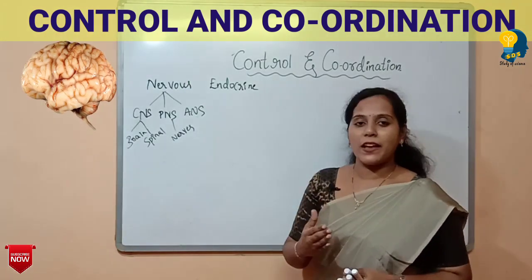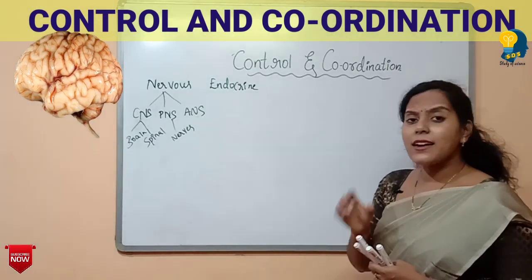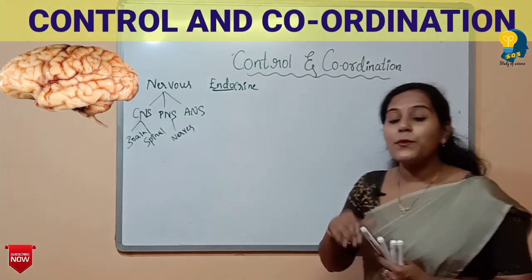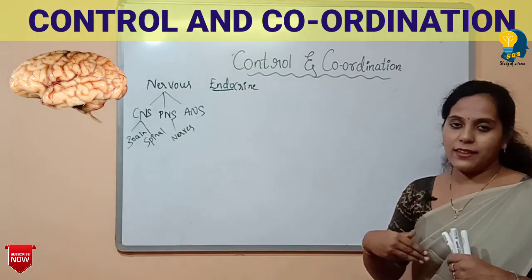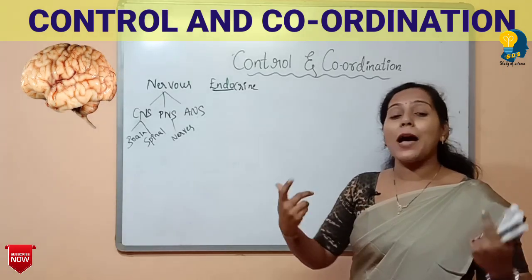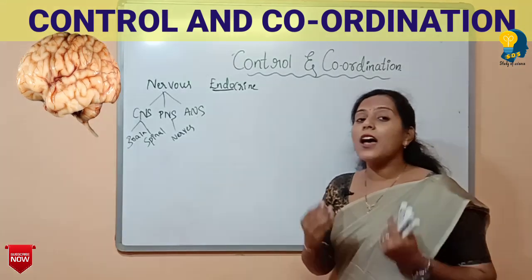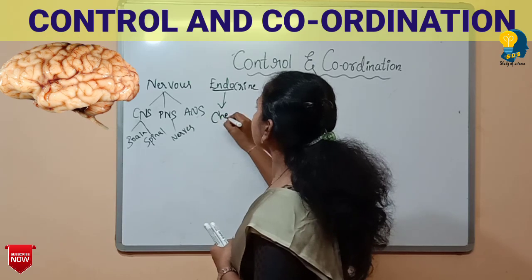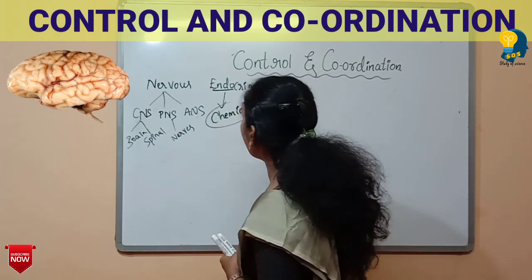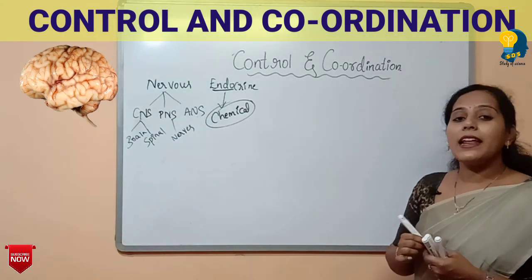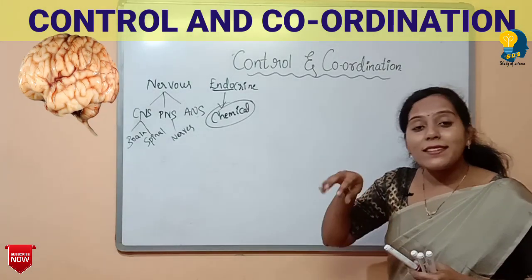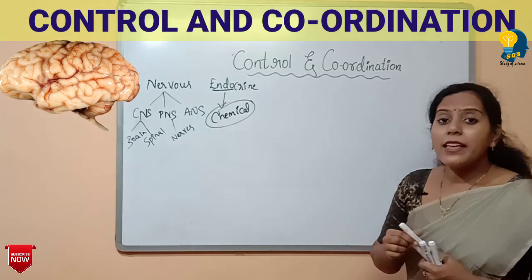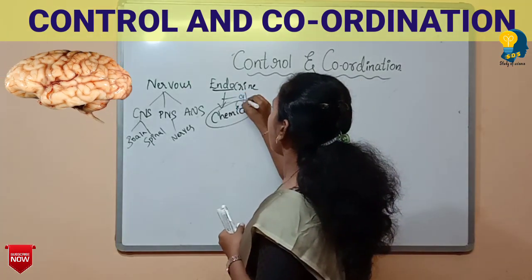Now let us understand what the endocrine system is. The name itself says — 'endo' means inside. Under the endocrine system, some chemicals are released inside the body to coordinate with the various systems. These chemicals are released by structures called glands.